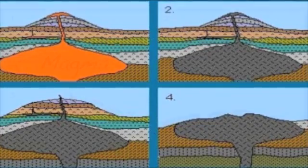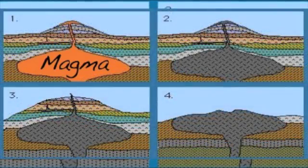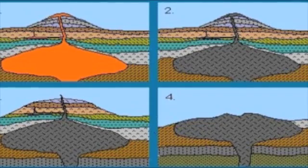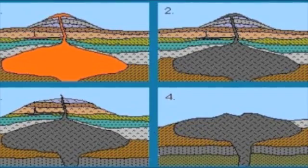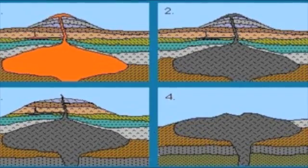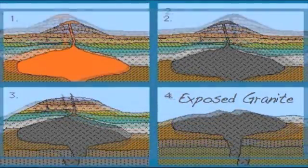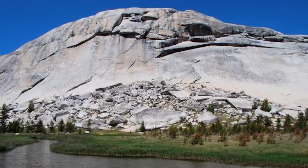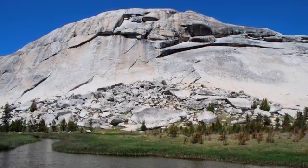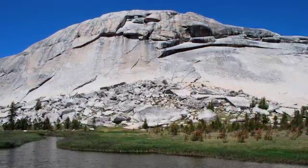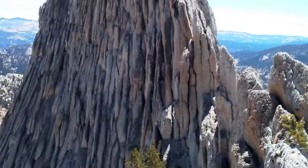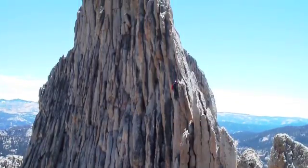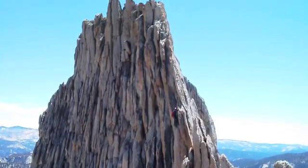Granite is formed as a slow cooling of magma underneath the earth's surface. Through time, the upper layers are eroded away eventually to expose the granite. When this granite is exposed, there's a lot of built-up internal pressure that needs to be released. This pressure is released in the forms of cracks that we call faults.